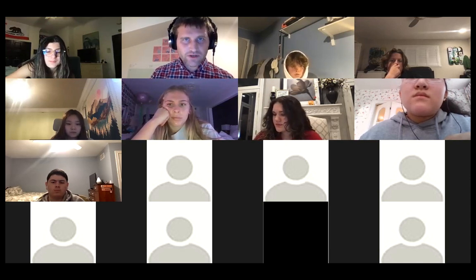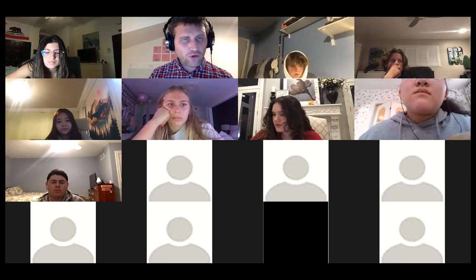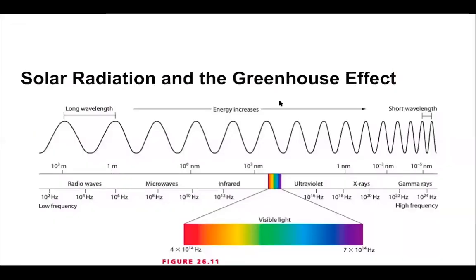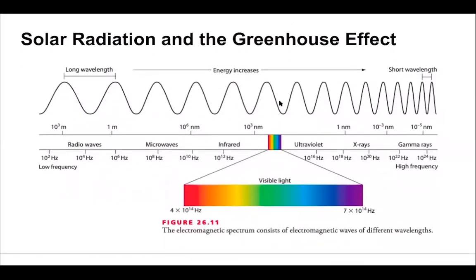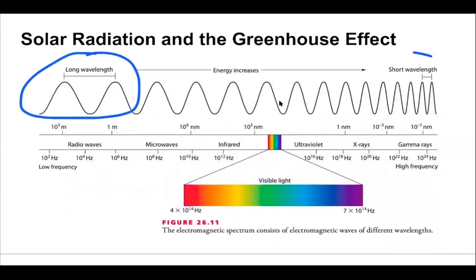I'm just going to review the images from the reading to make sure we're feeling good, and I've got a couple of poll questions to throw out. Is everyone seeing radiation and the greenhouse effect in front of them? So this is a diagram we'll spend more time on when we get into light, which we're going to do in relation to electrons and chemistry later in the year. Think of light as energy in the form of a wave — you've got long wavelength on one end and short wavelength on the other.